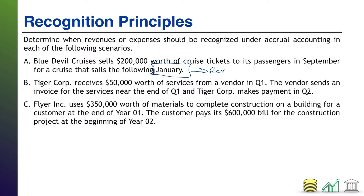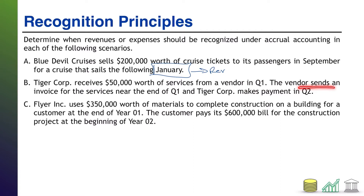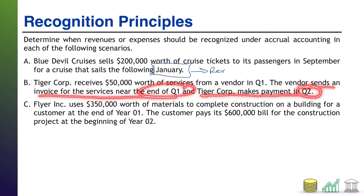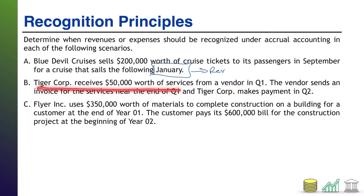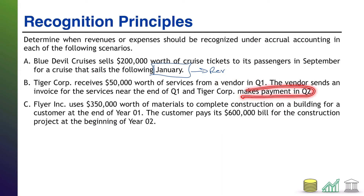All right, let's try Scenario B. Tiger Corps receives $50,000 worth of services from a vendor in Q1. The vendor sends an invoice for the services near the end of Q1 and Tiger Corps makes a payment in Q2. In this case, Tiger Corps is receiving services and so it's incurring the cost of those services — so we're talking about expenses. The vendor is performing the services in Q1, and Tiger Corps is paying in Q2. When do you record the expense?